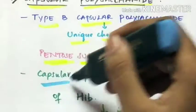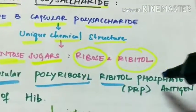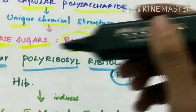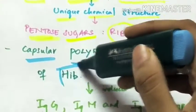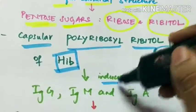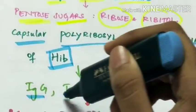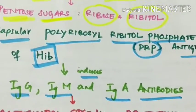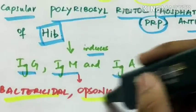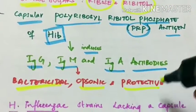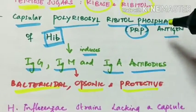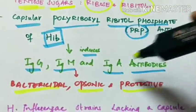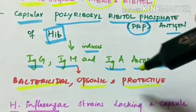The capsular polysaccharide ribitol phosphate antigen PRP which is present in Haemophilus influenzae type B induces immunoglobulin G, immunoglobulin M and immunoglobulin A antibodies which are bactericidal, opsonic and protective.